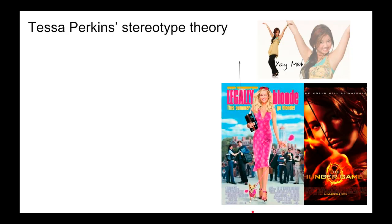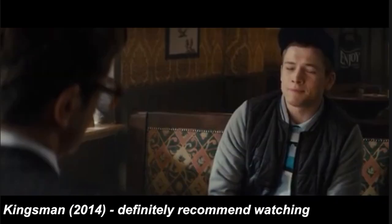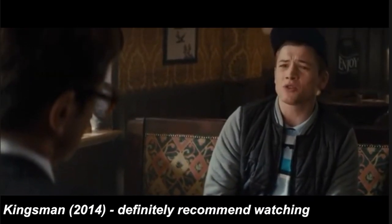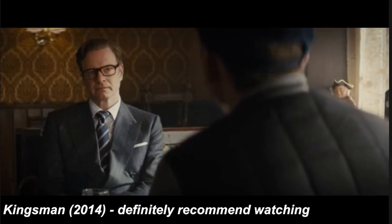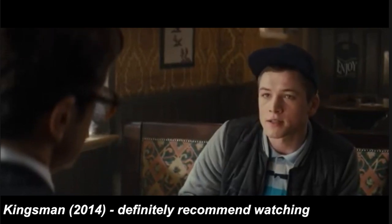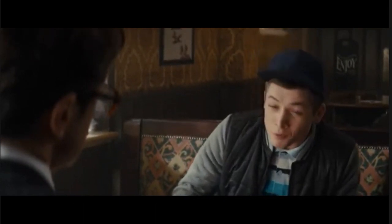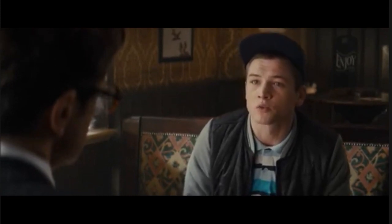Tessa Perkins' Stereotype Theory — she makes five assumptions. Not every stereotype is bad; there can be good ones. They are not always about minority groups — they can also be about the upper class. For example: 'Then won't we be cannon fodder for snobs like you? Judging people like me from your ivory towers with no thought about why we do what we do. We ain't got much choice. You get me?'